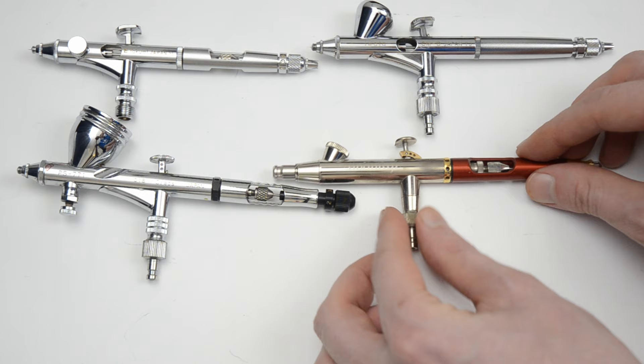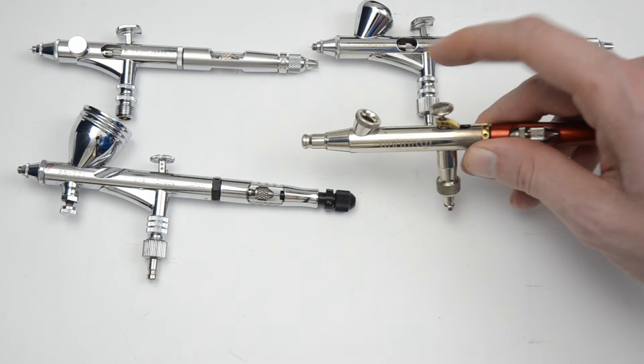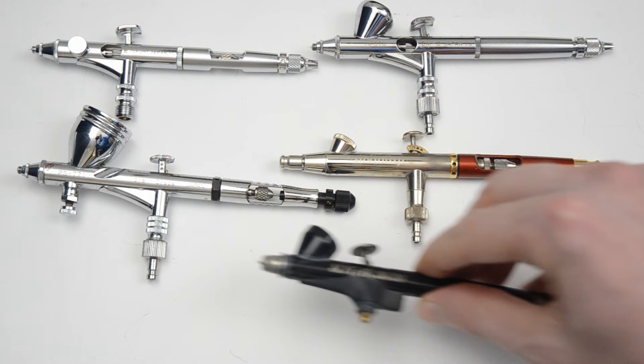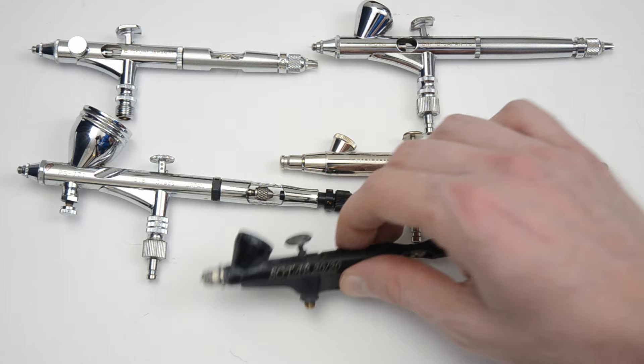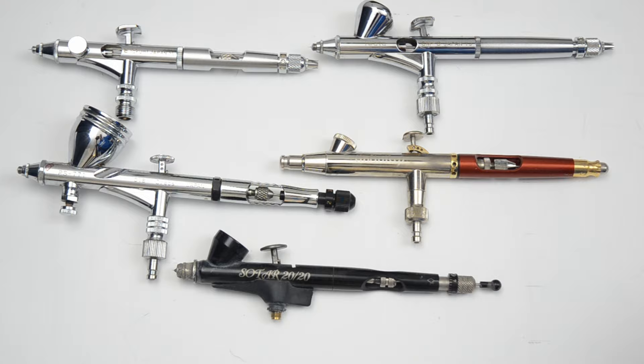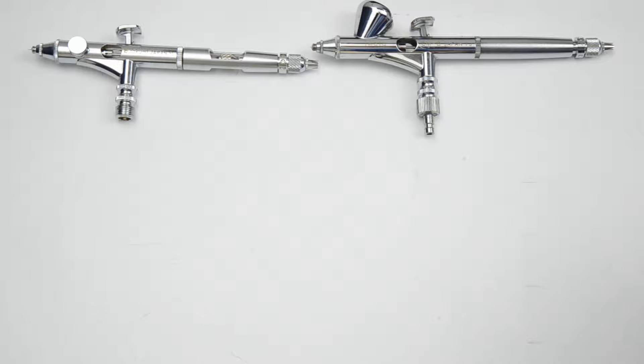Another option at half the price is the Harder and Steenbeck Infinity. This is a great airbrush. I have a few problems with it but I'll talk about that in another video. And at a fraction of the cost of the Micron is the Badger Sotar 2020 which is one of my favorite airbrushes of all time. You could pick up the Sotar for around $100. For the price it's one of the best airbrushes you can get. The trigger is extremely responsive. It sprays slightly different than the Micron but it's still an amazing airbrush and I highly recommend it to anyone looking for a detailed airbrush.